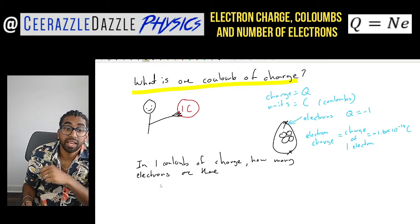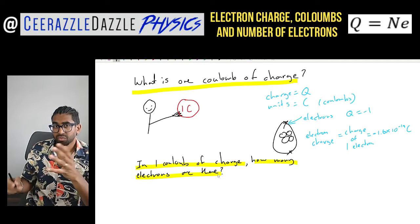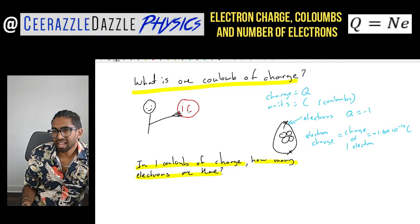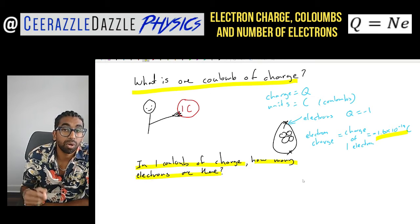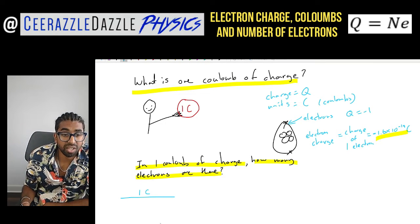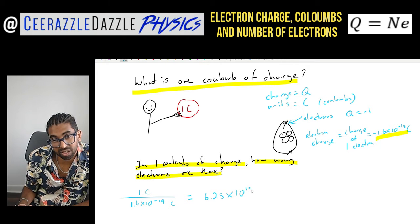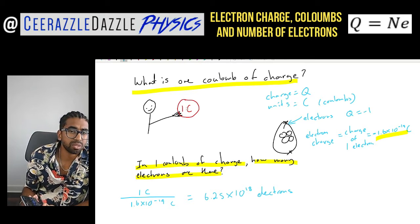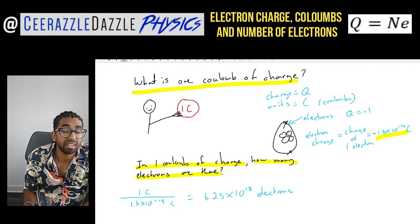So the next thing we're going to talk about is: in one coulomb of charge, how many electrons are there? Back to this diagram — let's say you're given one coulomb of charge. How many electrons are inside? Bear in mind the charge of each electron is 1.6×10⁻¹⁹ coulombs. We can work that out simply: take the total amount — 1 coulomb — and divide it by the charge of each electron, 1.6×10⁻¹⁹ coulombs, ignoring the negative sign. That gives us 6.25×10¹⁸ electrons.